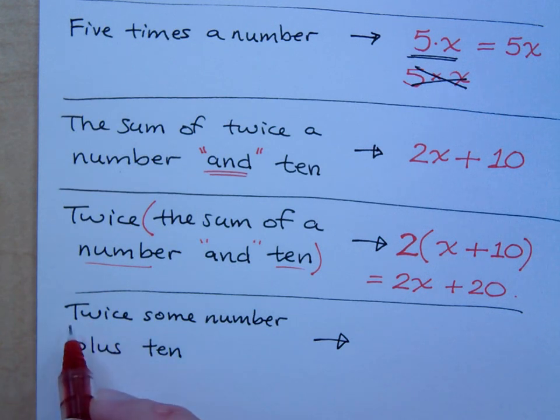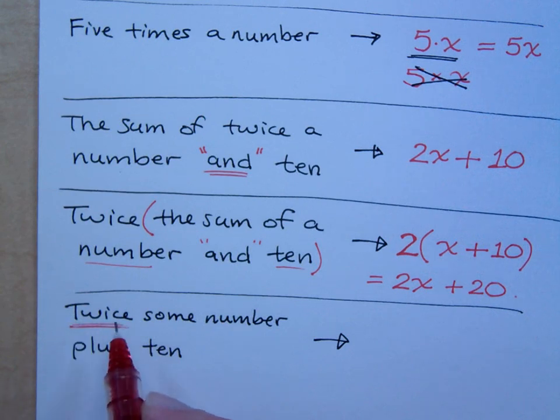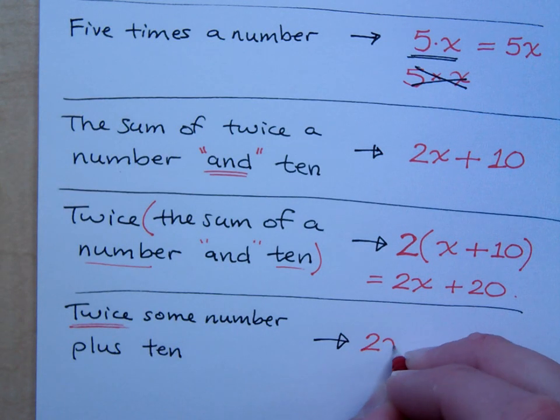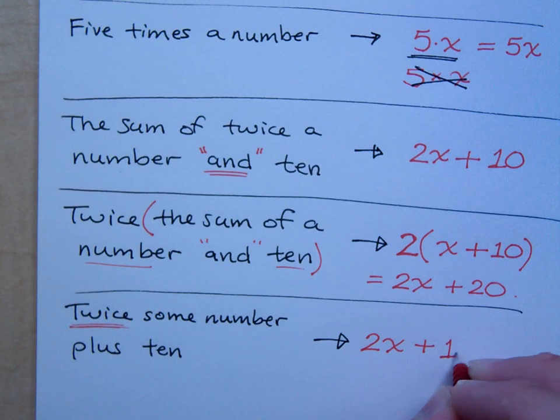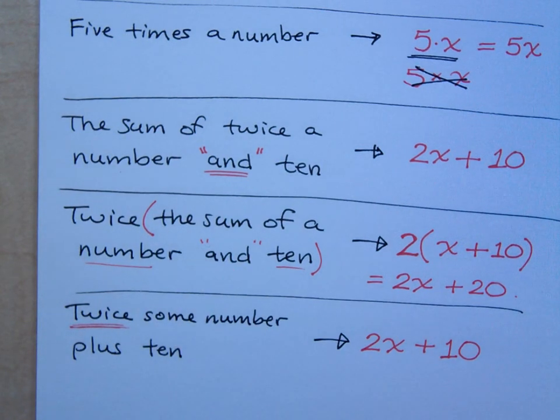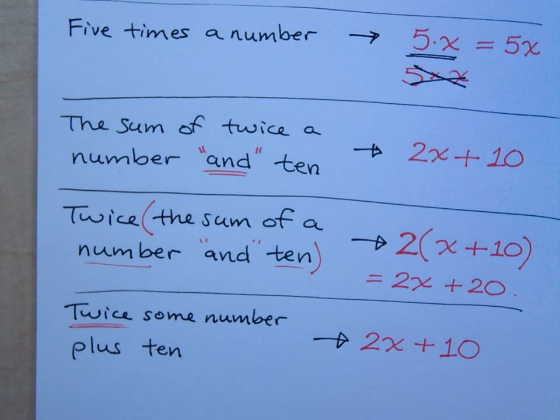Well, when I see the word twice, it means two times something, right? What immediately follows this word, excuse me, twice? Some number, right? So here it's twice some number. So that means just 2x, and then you have what? Plus ten. In the last example, it wasn't twice a number. It was twice the sum. It was twice a group, which is why the parentheses were important to us there.